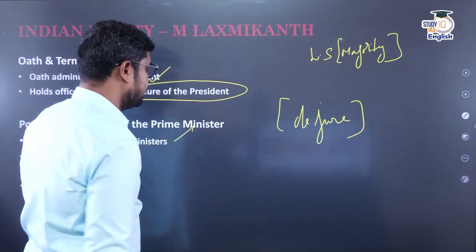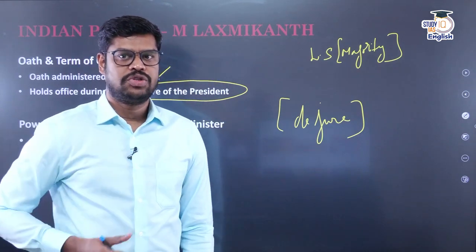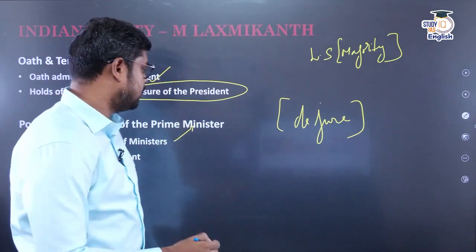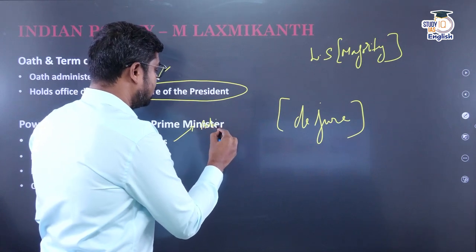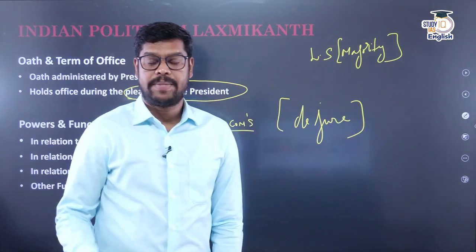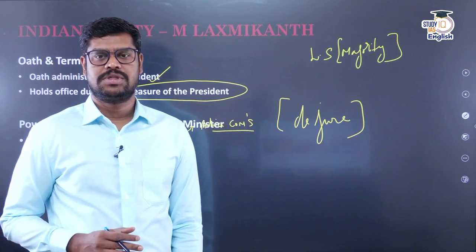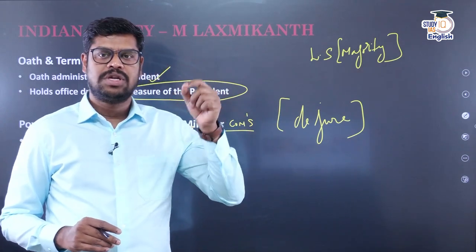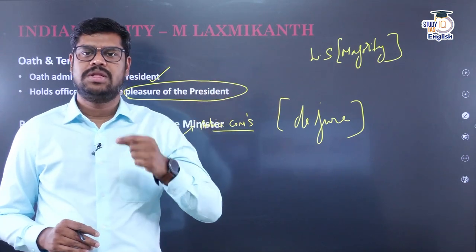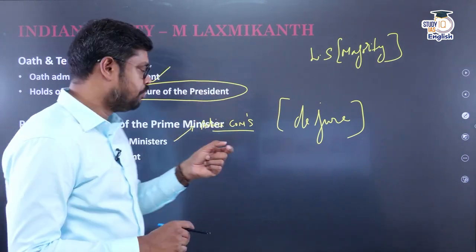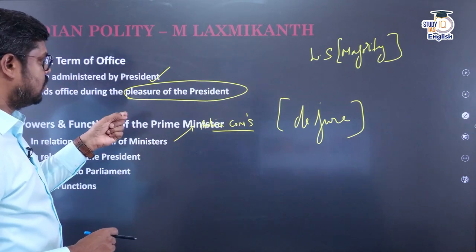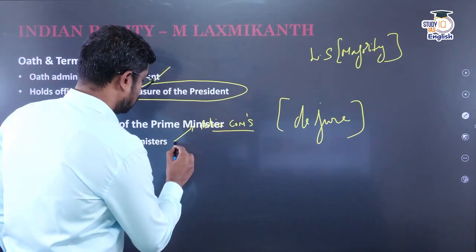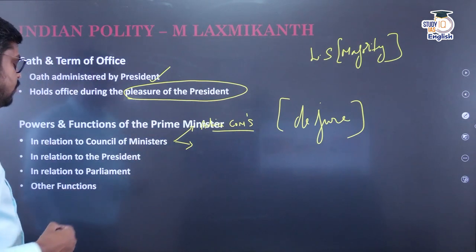What are the functions of the Prime Minister in relation to the Council of Ministers? First, the Council of Ministers are appointed by the President, but on the advice of the Prime Minister. The President cannot appoint the Council of Ministers on his own — it is the Prime Minister who advises the President to appoint them. The Prime Minister essentially decides his colleagues so that he can work effectively.